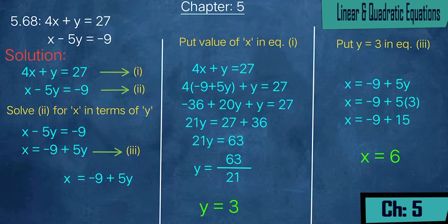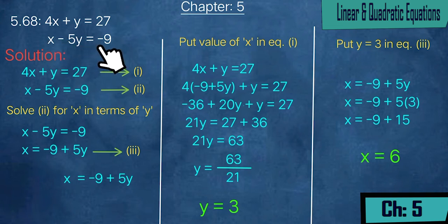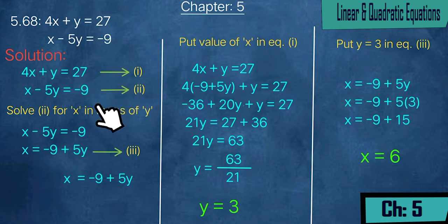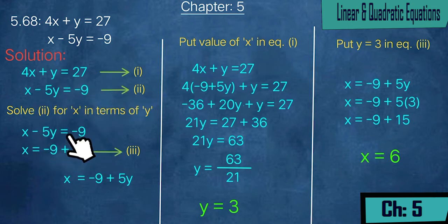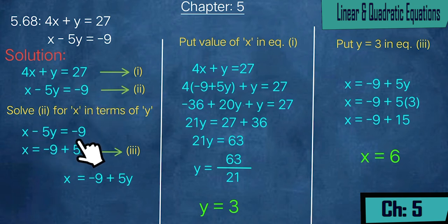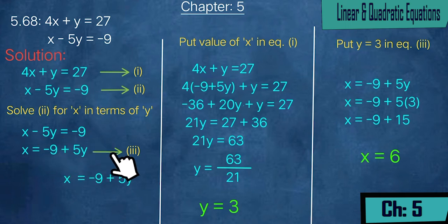Next we have taken exercise 5.68: 4x + y = 27 and x - 5y = -9, labeled equation 1 and equation 2. Again we will separate one variable and take all other values to the other side. I have taken equation 2: x - 5y = -9, and solved for x: x = -9 + 5y, naming this equation 3.